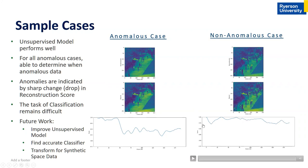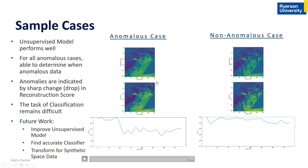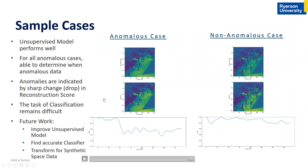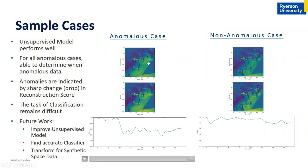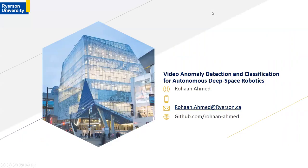To summarize, we used an unsupervised model for anomaly detection and a simple linear threshold classifier. Future work includes improving the unsupervised model, finding a better or more accurate classifier, obtaining a larger dataset to enable supervised learning, and ultimately applying this model to a synthetic space dataset — which is the ultimate goal of this project.